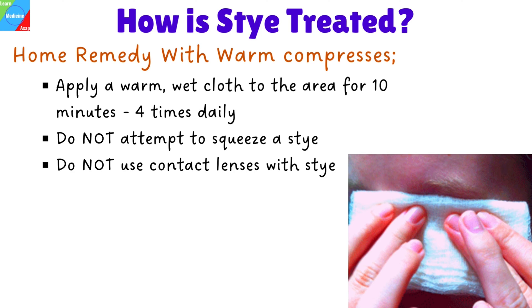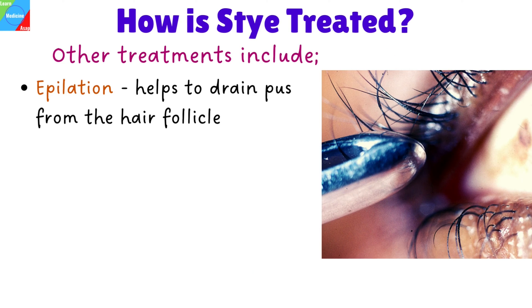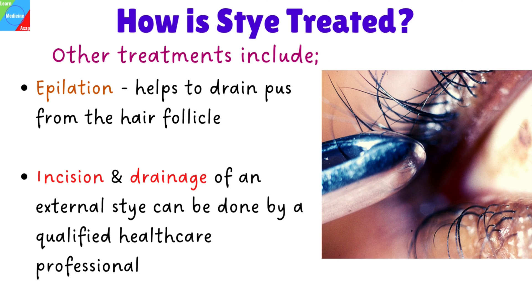Do not use contact lenses or wear eye makeup until the area has healed. For a stye that persists, your doctor may prescribe antibiotic ointment. Other treatments may include epilation of the eyelash, where the eyelash is plucked out to help the pus from the hair follicle drain. Incision and drainage of an external stye can be done by a qualified healthcare professional using a sterile needle to open the stye and drain the pus. You should not attempt this yourself, as you might spread the infection to the eyelid with serious consequences.